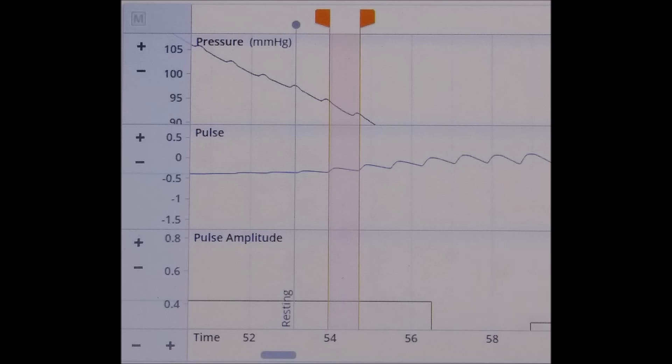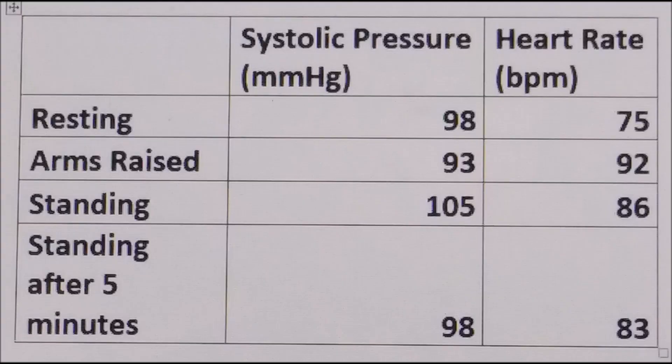Shortly I will provide a completed data table showing the systolic pressure as well as the patient's heart rate for each one of the four conditions. Here's the final data table comparing the systolic pressure in millimeters mercury with the heart rate of the patient in beats per minute under the four conditions: Resting, arms raised continuous for two minutes, immediately after standing from resting position, and after standing still for five minutes.